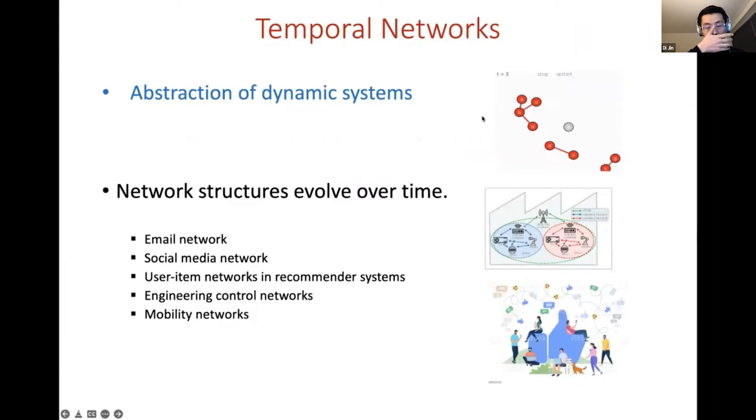So temporal networks, as we know, are important data structures to model dynamic systems, where nodes correspond to interacting elements and links correspond to the interactions. In temporal networks, most importantly, the network structure may evolve over time.